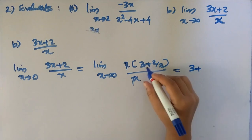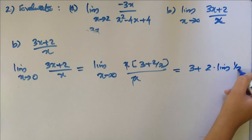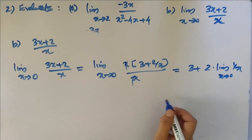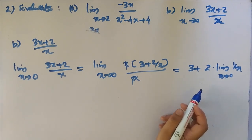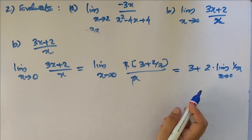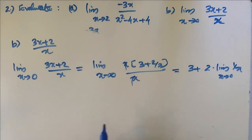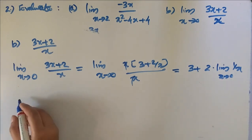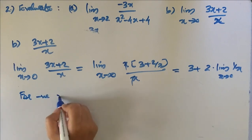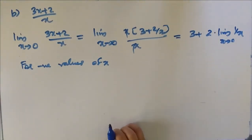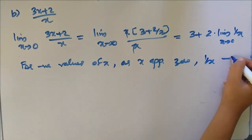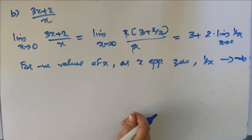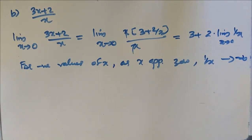We write the expression as 3 plus 2 times (1/x). Now, limit of 1 by x as x tends to 0: for negative values of x, as x approaches 0 from the left, 1 by x tends to minus infinity.